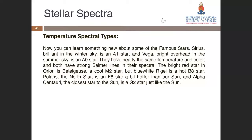Now you can learn about some famous stars. Sirius, the brightest star visible now — if you go outside after this lesson you'll see a bright star at around the 12 o'clock position — is an A1 star. Vega, bright overhead in summer, is an A0 star; they have nearly the same temperature and both have strong Balmer lines. The bright red star in Orion is Betelgeuse, a cool M2 supergiant. Blue-white Rigel, the second brightest in the southern hemisphere, is a hot B8 star. Polaris the north star is an F8 star. Alpha Centauri, the closest star to us, is a G2 star — just like our own sun.